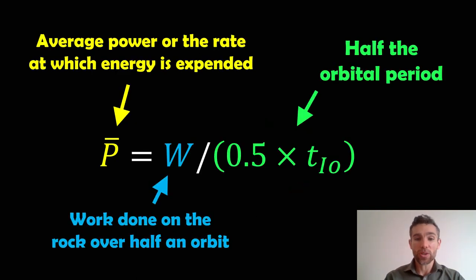Now, what we then want to do is calculate the average power, or the rate at which energy is expended, during this process, essentially. So we want to do it over half the orbital period. So TiO is the orbital period. We do that over half the orbital period, because that's when the variation is occurring at pericentre, then apocentre. And we also want the work done on the rock over half an orbit, for the same reason, basically. It's going to rise and descend over half an orbital period. So that will be our average power.